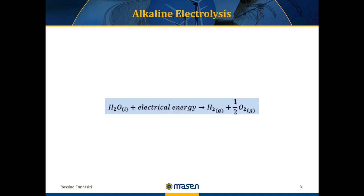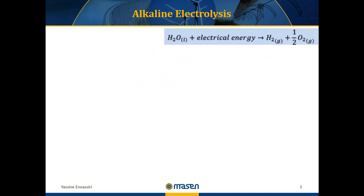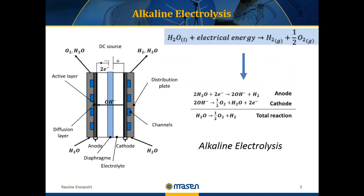Water electrolysis is the reaction of water decomposition using electrical energy, producing two gases in parallel: hydrogen and oxygen. This reaction is achieved using a system called an electrolyzer. There are mainly three technologies: PEM, alkaline, and solid-oxide electrolysis cells. In our case, we will be focusing only on alkaline electrolysis, which is the most well-matured technology compared to the others.